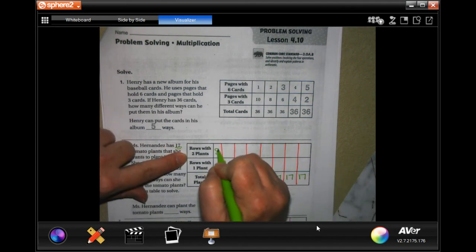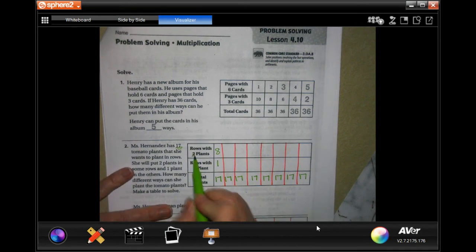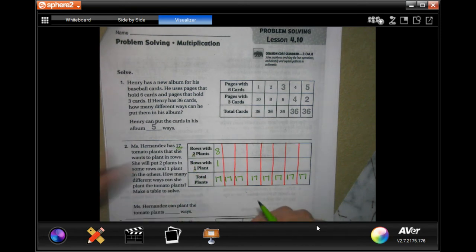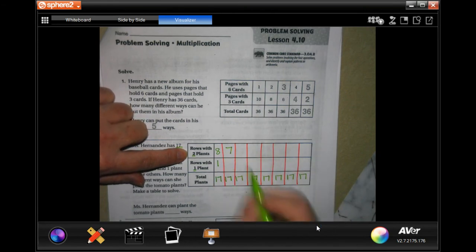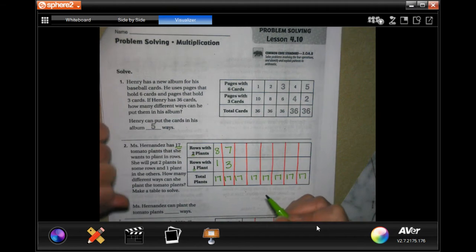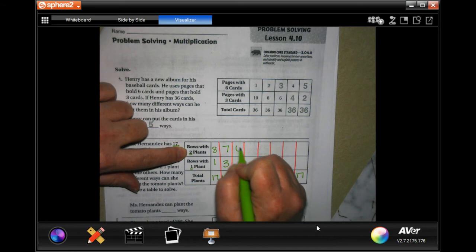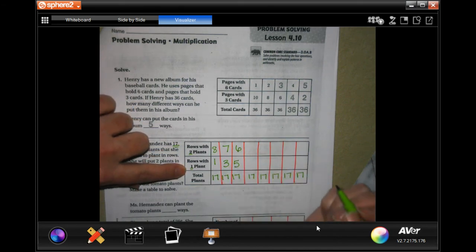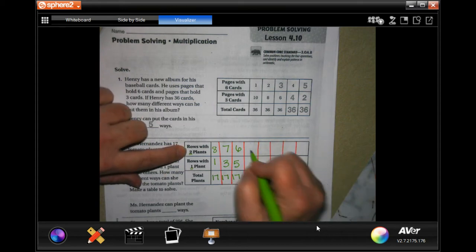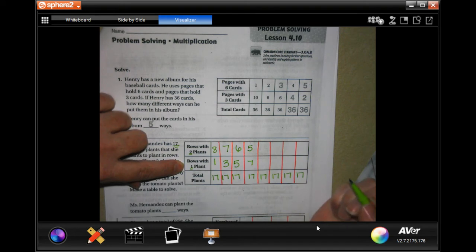So I can put two times eight plus one. These are going to be the multiples. I can do two times seven is 14, and 14 plus three is 17. I can do two times six is 12 plus five is 17. I can do two times five is 10 plus seven is 17.